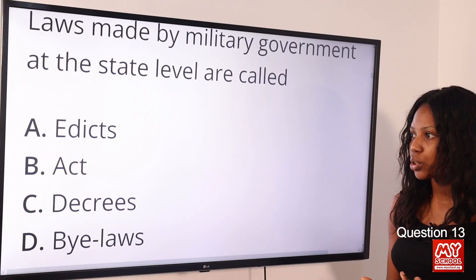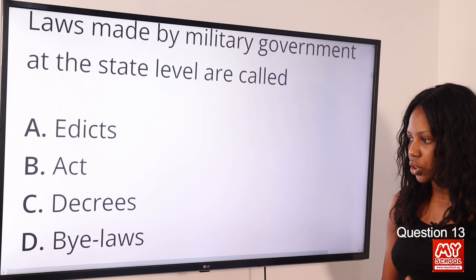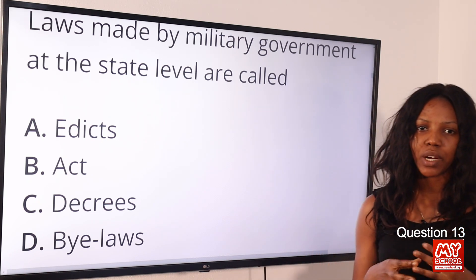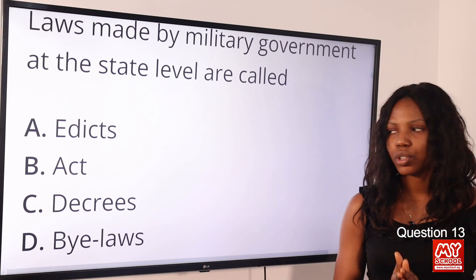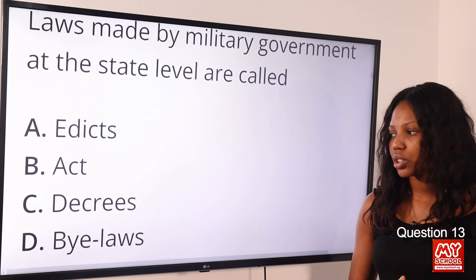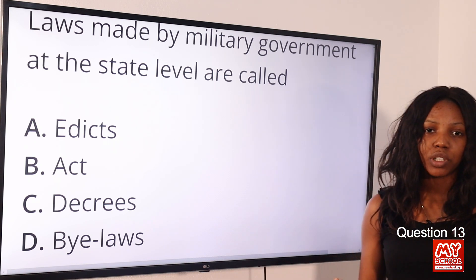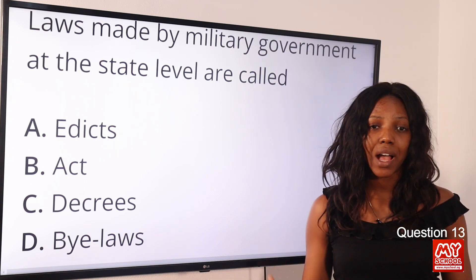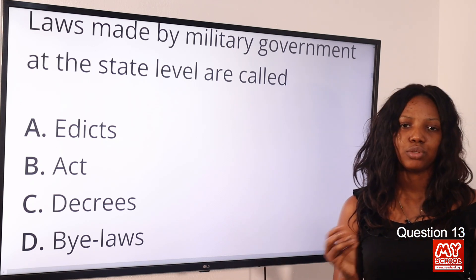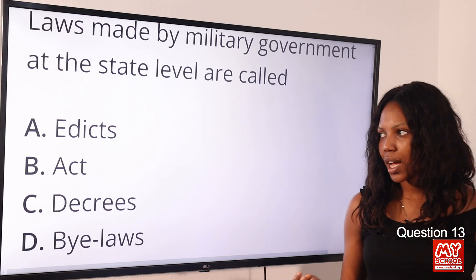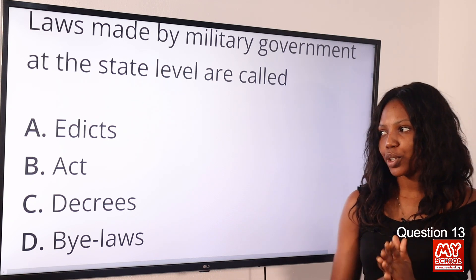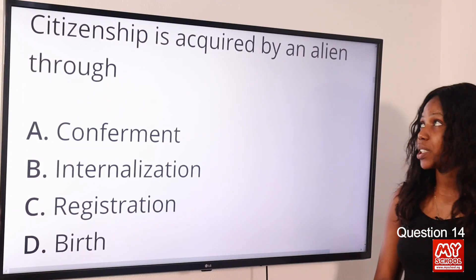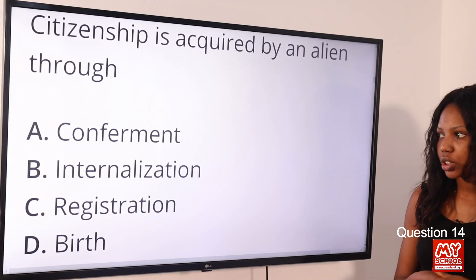Question 13: Laws made by military government at the state level are called — option A: edict; option B: act; option C: decree; option D: bylaws. The answer is option A, edict. Laws made by the military at the state level are called edicts; at the federal level they are called decrees; and at the local government level they are called bylaws. Acts are bills that have passed through the two chambers of the legislature.